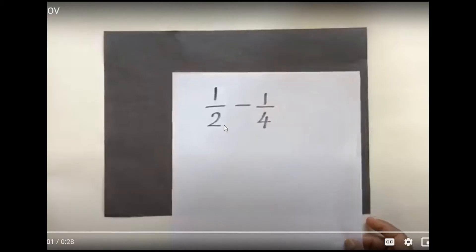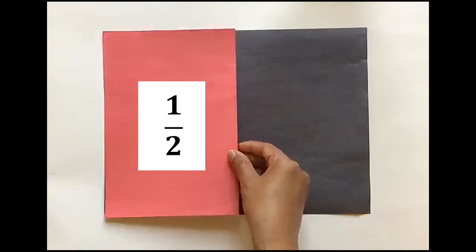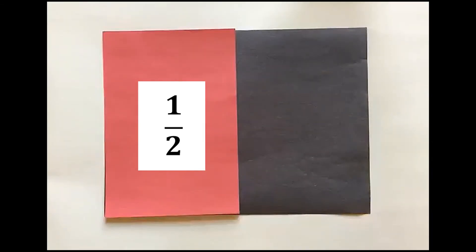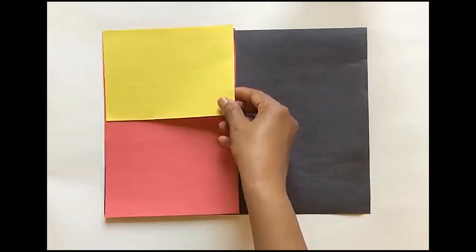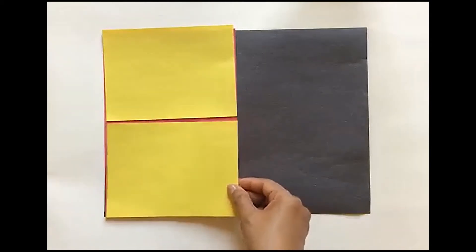Let's subtract 1 fourth from 1 half. Let's use the red construction paper to represent the 1 half. Since we do not have the 1 fourth, I'm going to find the equivalent fraction for 1 half using 2 fourths.